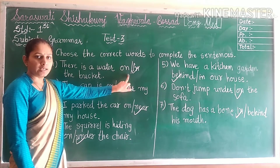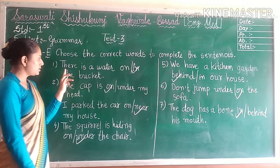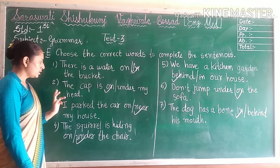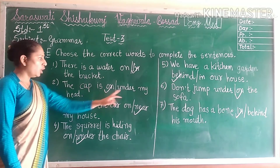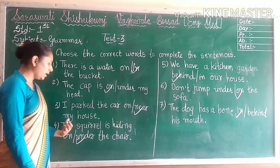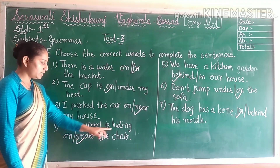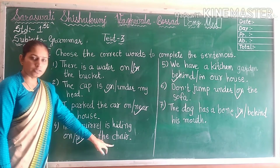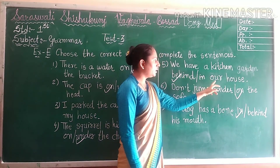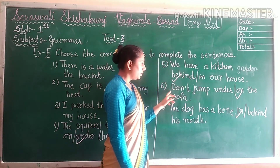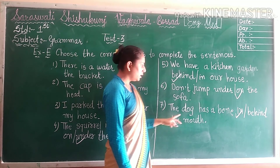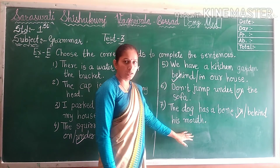So this way you have to take the answers in your textbook. Let's review: First — there is a water in the bucket. Second — the cap is on my head. Third — I park the car near my house. Fourth — the thief is hiding under the chair. Fifth — I have a kitchen garden behind our house. Sixth — don't jump on the sofa. And last — the dog has a ball in his mouth.